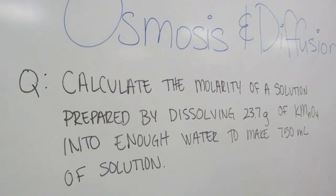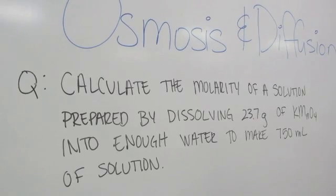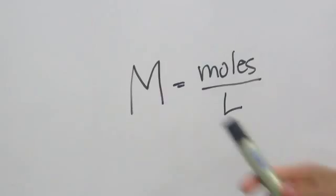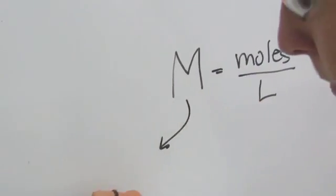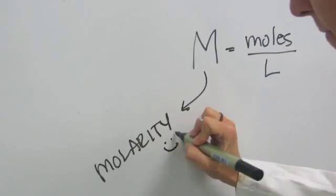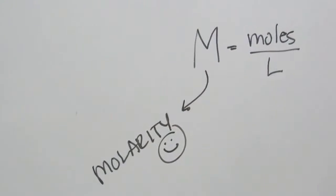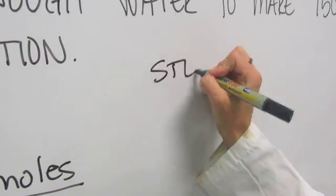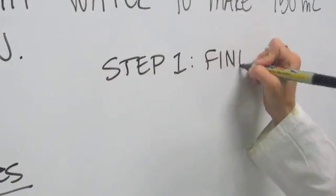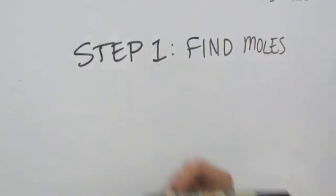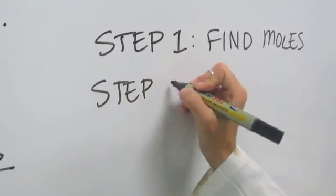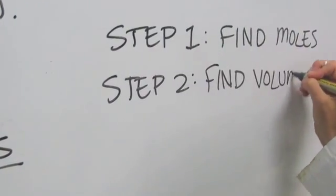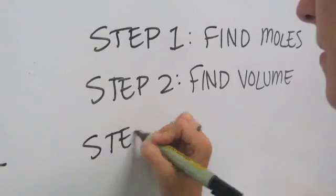The first step to any problem is find out what the problem is asking us. What is it asking us for? Molarity, that's right. So to find molarity there are three easy steps. Step one, you find the moles. Step two, we need to find our volume. And step three, the grand finale is of course to find molarity.